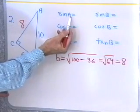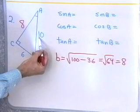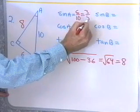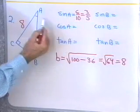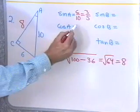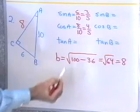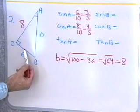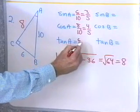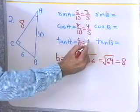The sine of angle A is the ratio of the side opposite angle A to the hypotenuse: 6 over 10, which is 3 fifths. The cosine of angle A is the adjacent side, 8, divided by the hypotenuse, 10, giving 8 tenths, which is 4 fifths. The tangent of angle A is opposite over adjacent: 6 divided by 8, which comes out to 3 fourths — equivalently, sine over cosine gives the same result.